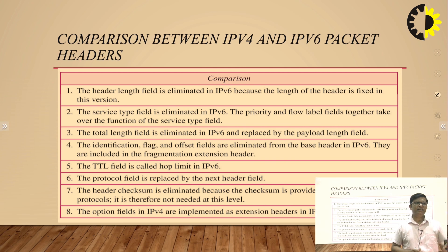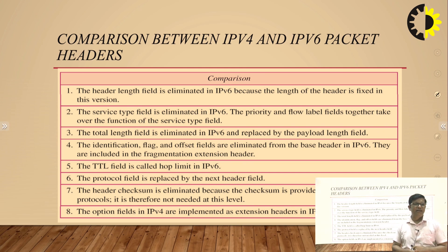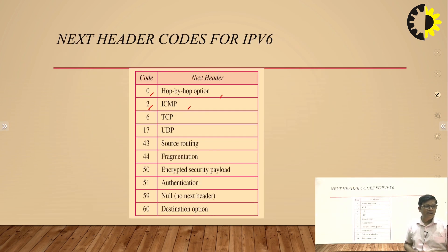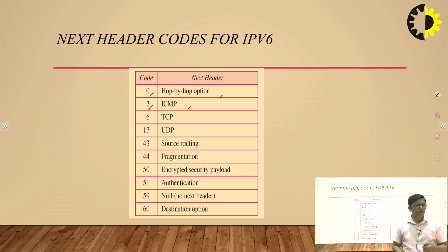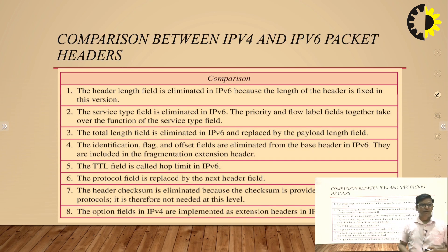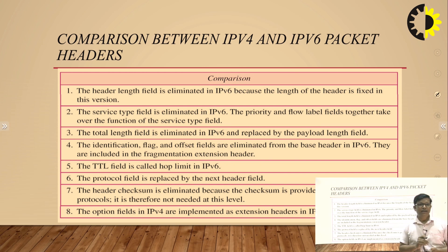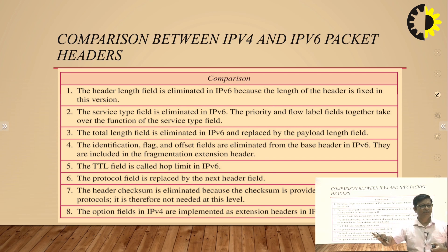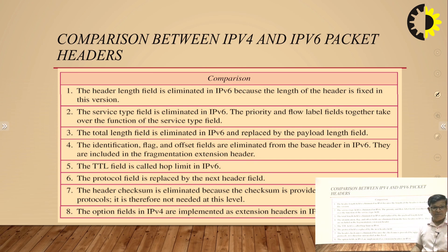Hop limit is the better terminology compared to TTL (Time to Live). The protocol field is replaced by the next header field, which defines what type of protocol is being used. The option field in IPv4 is implemented as extension headers in IPv6. In IPv4, if the data size is beyond HLEN, that size is treated as the option field. In IPv6, this is implemented as extension headers — that is the beauty of IPv6.